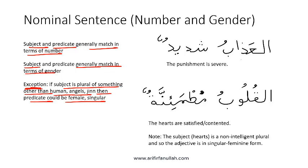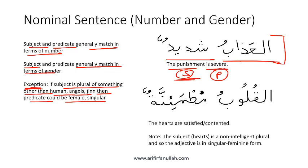Now let's look at some examples. Al Azabu Shadidun. This is a regular scenario: the statement means 'the punishment is severe.' The punishment is the subject and severe is the predicate. The subject is expressed as a proper noun: Al Azabu, meaning the punishment. Shadidun means severe. Since this is the Khabar or predicate, it is expressed in common noun form, and we know that because we see the Tanween.